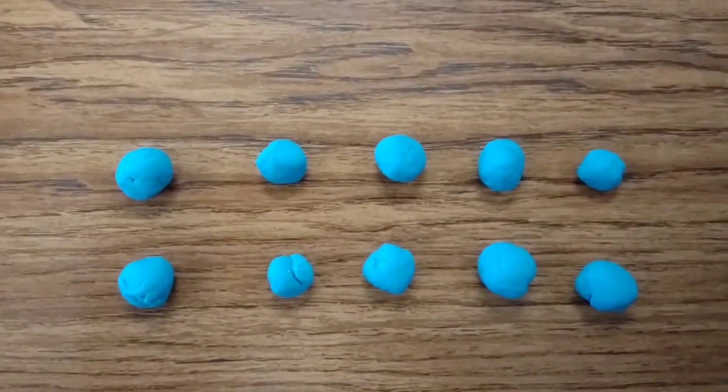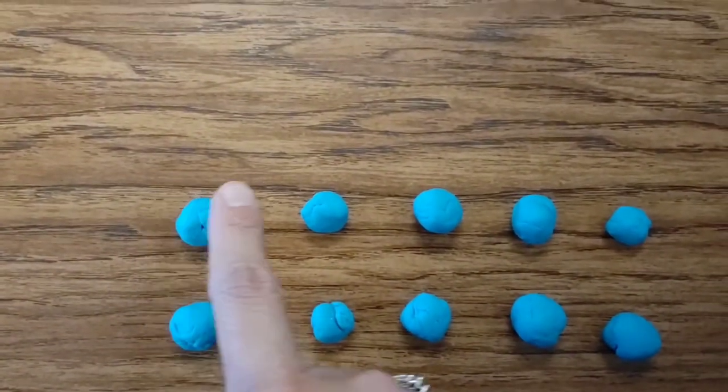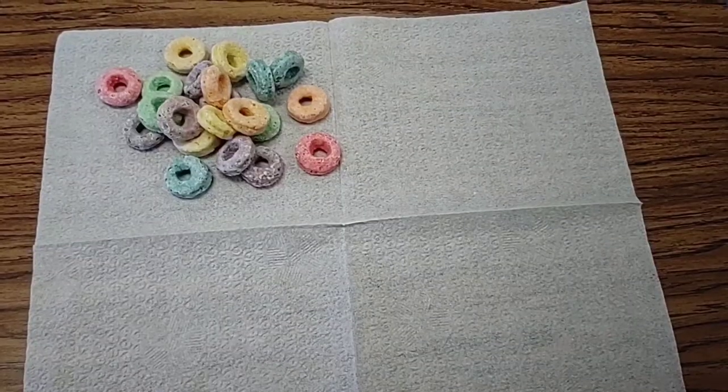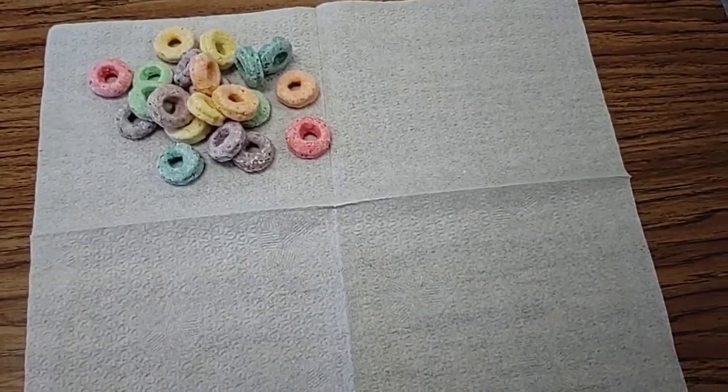So that's a play-doh array. Two rows and five in each. Two times five is ten.